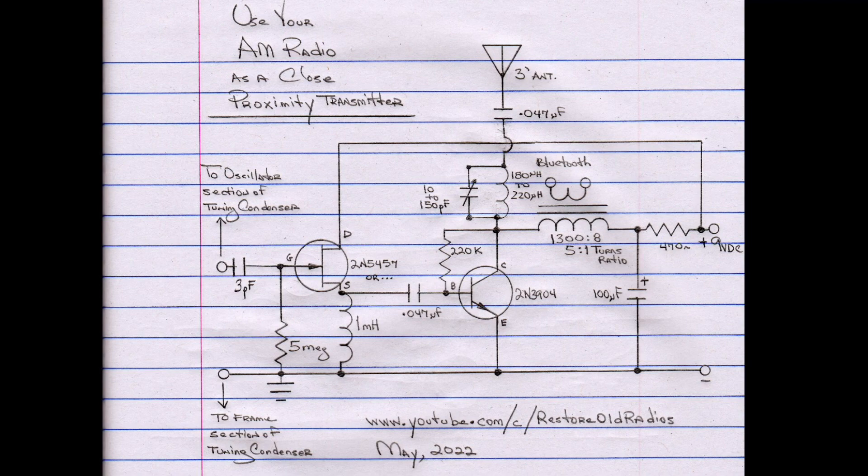Remember the oscillator in this particular radio is operating 465 kc or kilohertz above the broadcast span frequency. So I can start just around 1000 kilohertz or 1 megahertz in my case and modulate north of that.